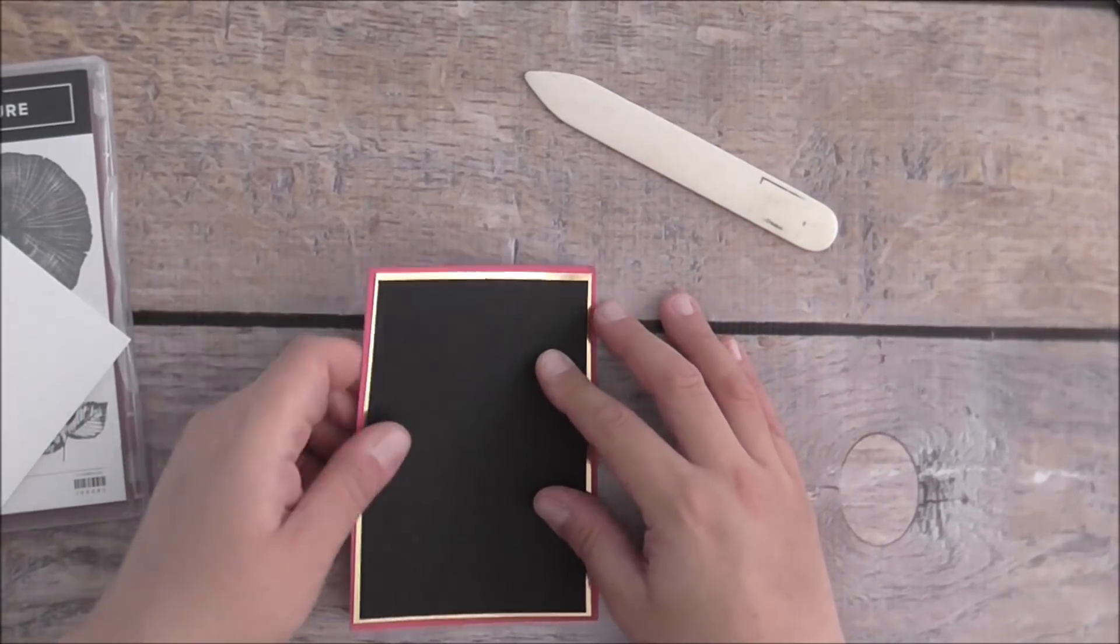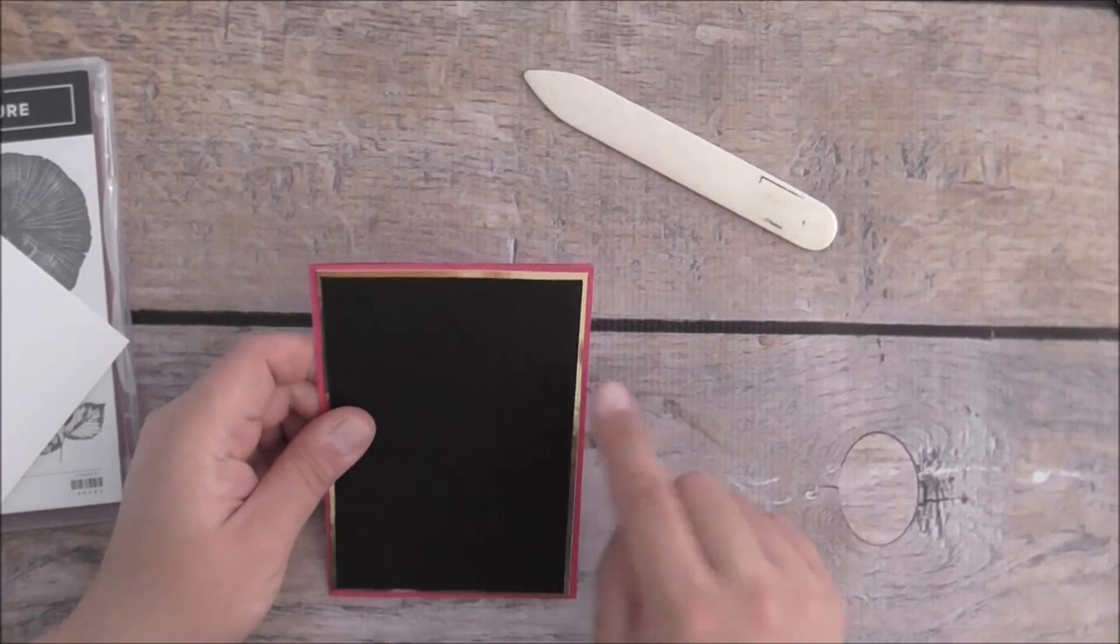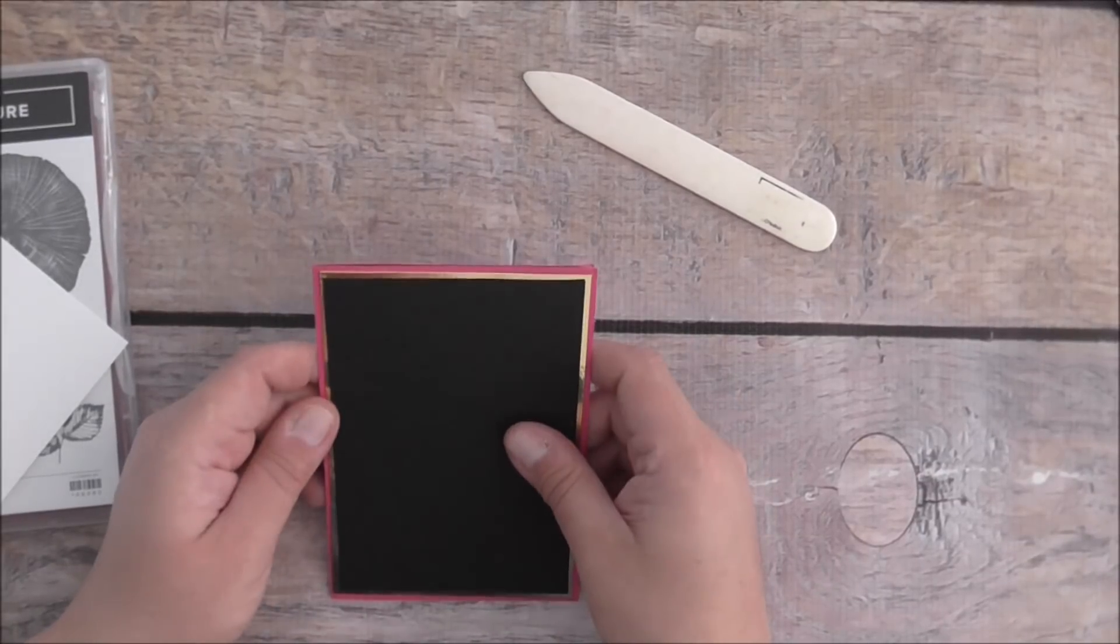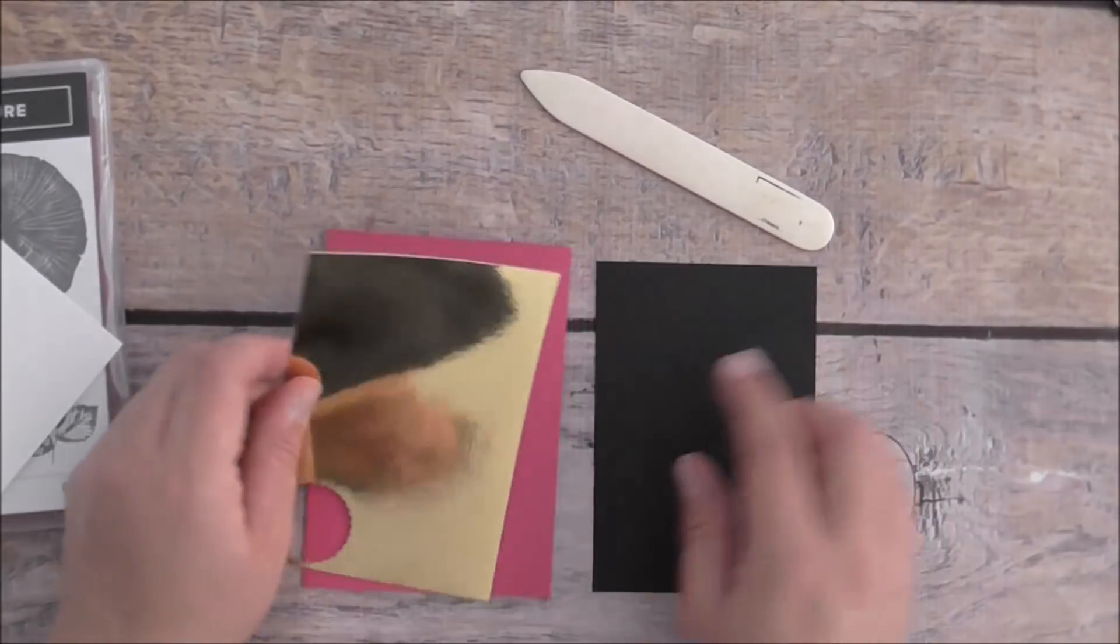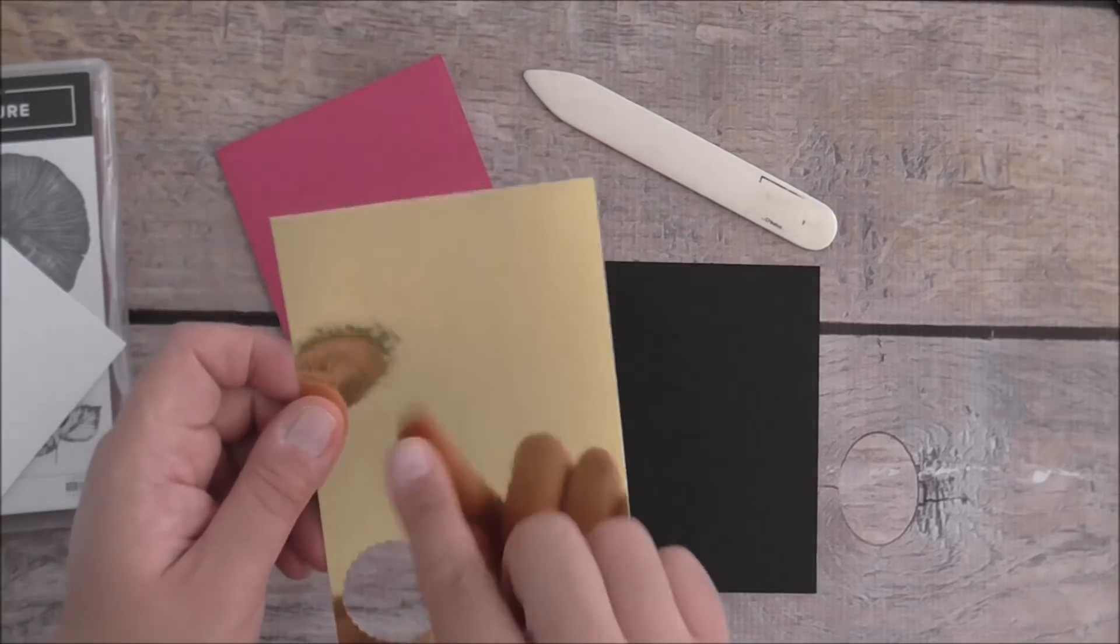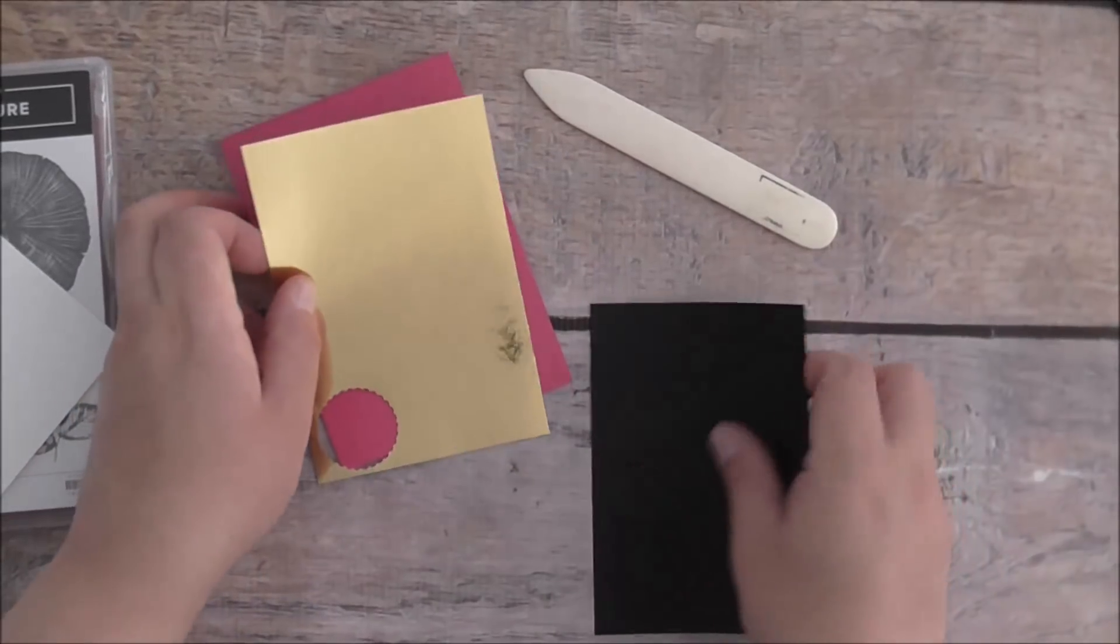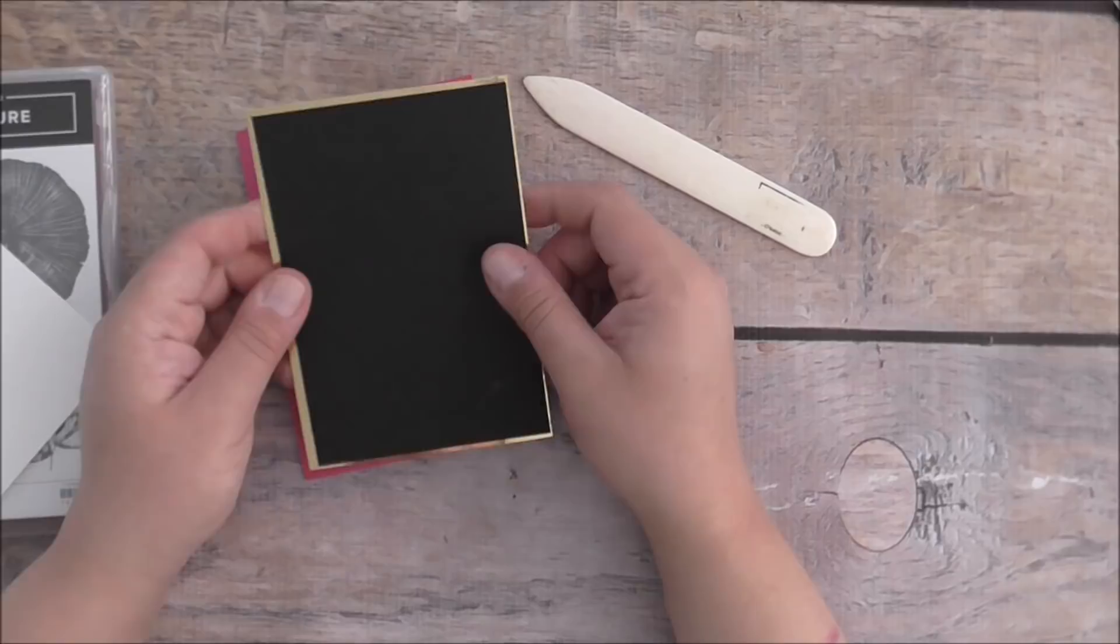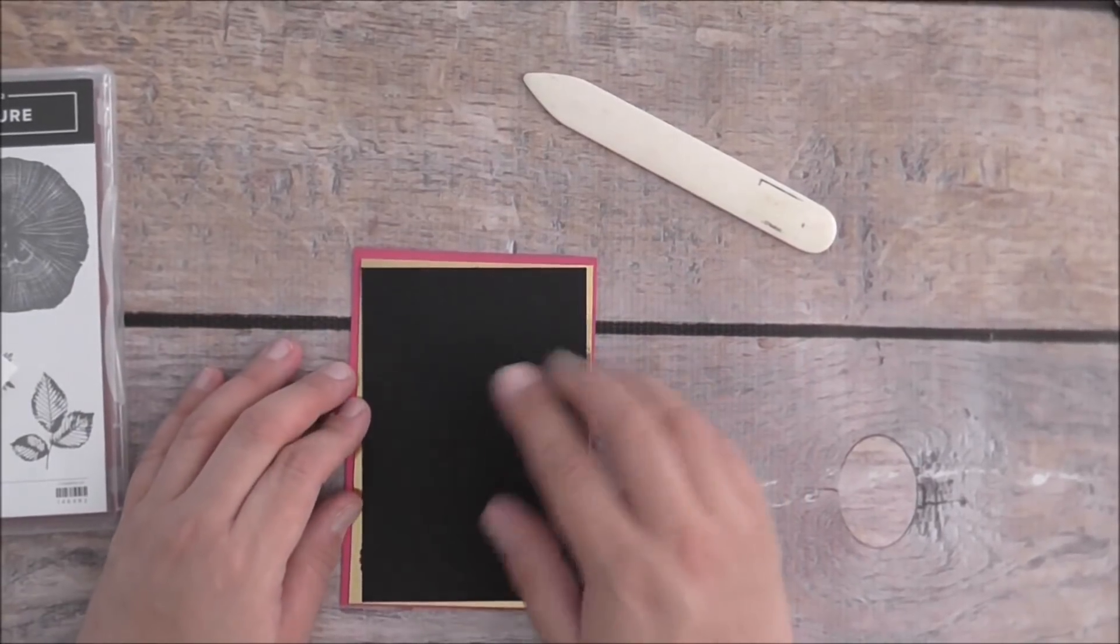Just make sure that the gold panel is smaller than the black, which is smaller again. As you can see, I've already punched through some shapes, so you can use scraps like this again. If you put that on top, no one will know what's going on underneath.